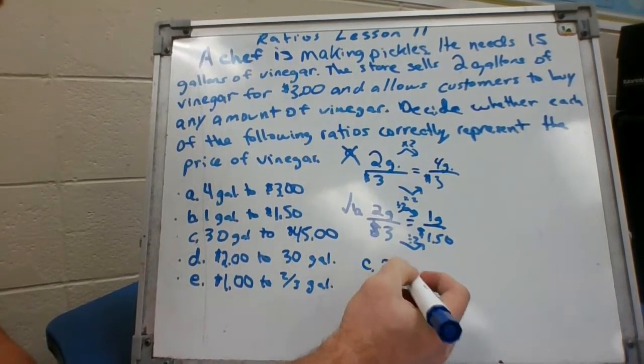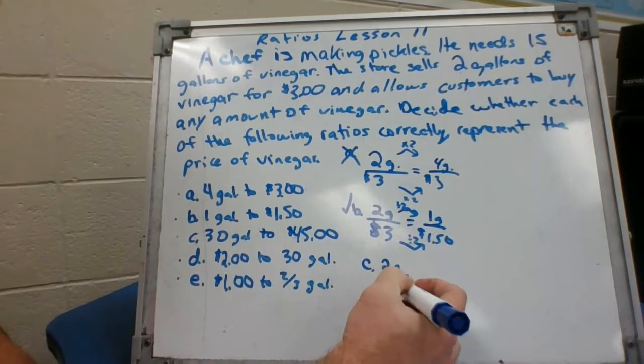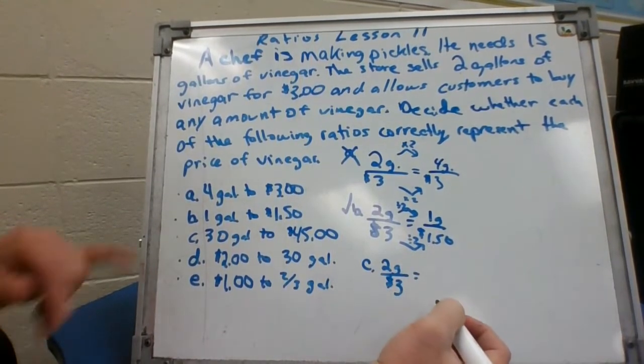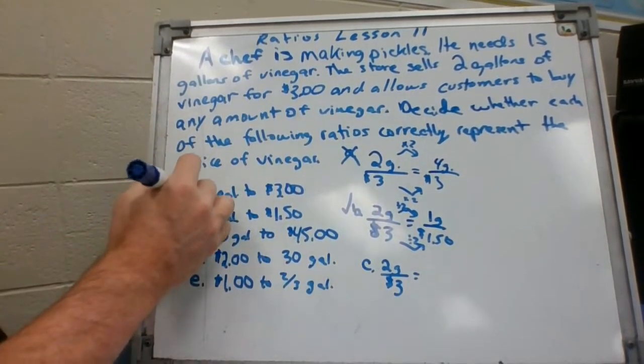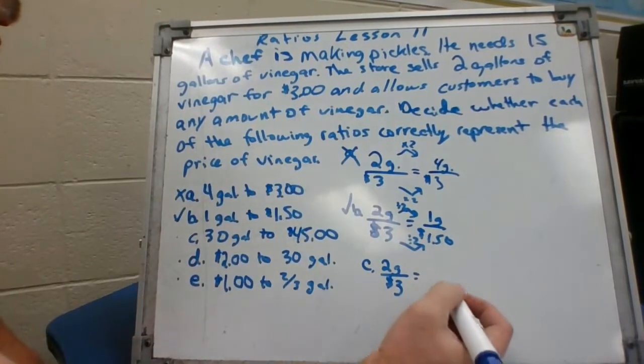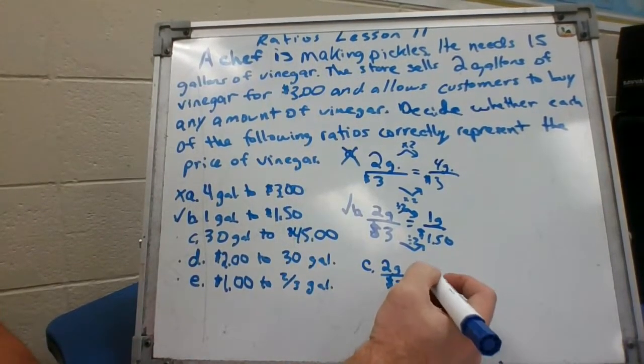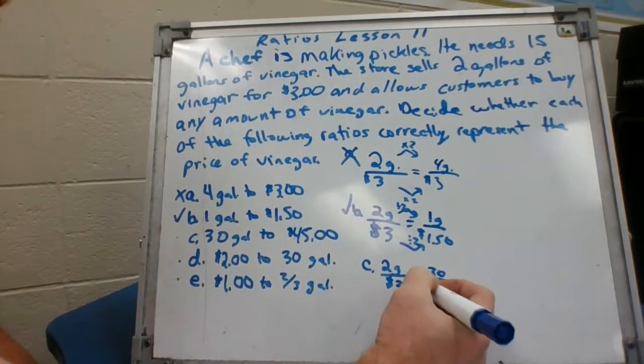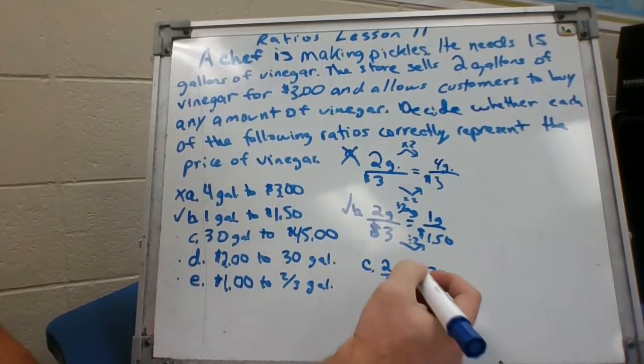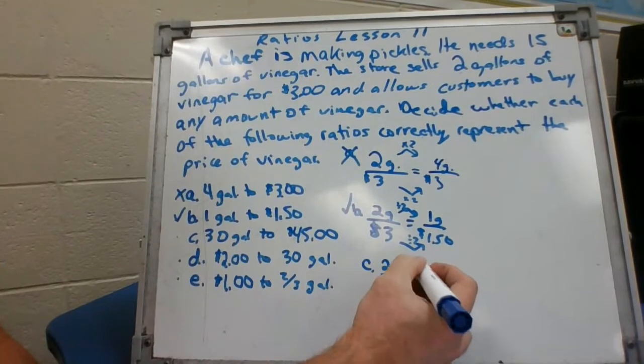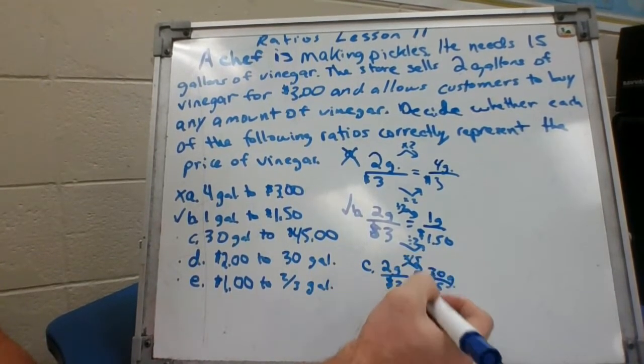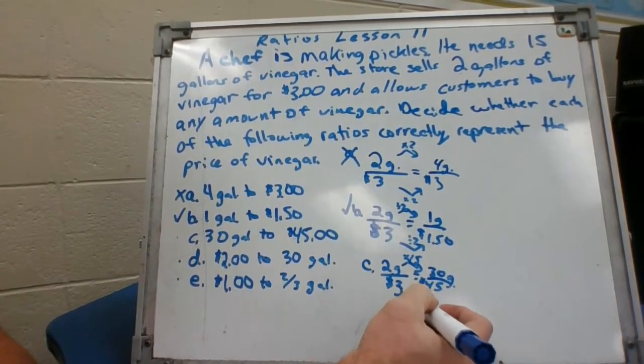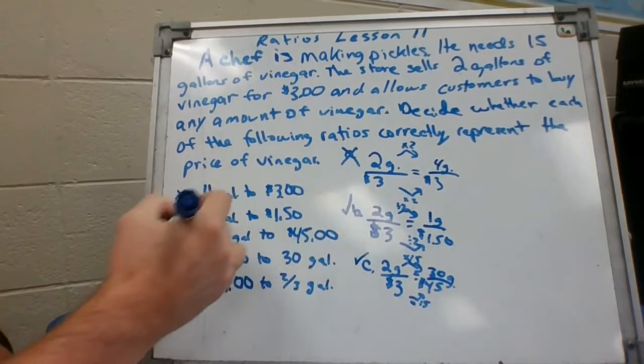Our given down, two gallons over three dollars equals, we're gonna see right now. 30 gallons to 45 dollars. We know to get from 2 to 30 we multiply by 15, to get from 3 to 45 we multiply by 15, so that is a good one also.